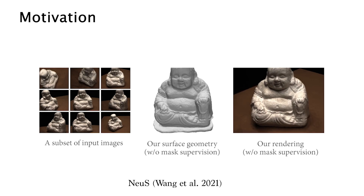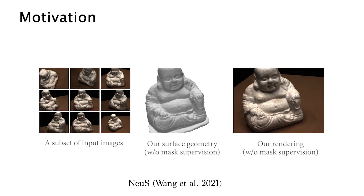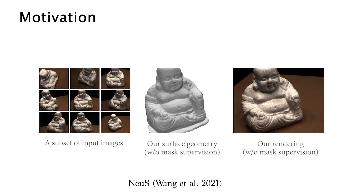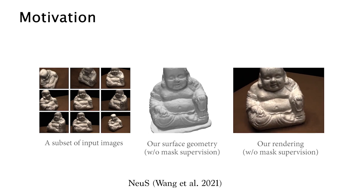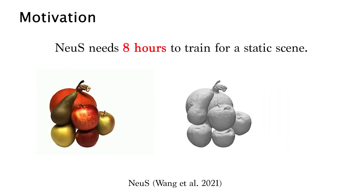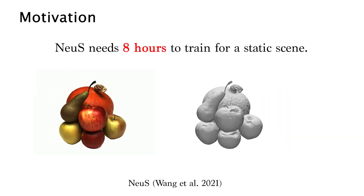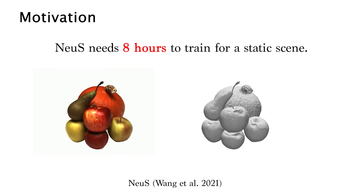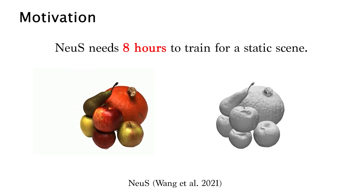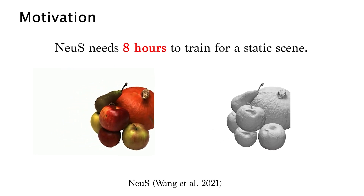Recently, 3D reconstruction with neural implicit representations has become a promising alternative to traditional methods. NuS, as a representative work, can produce high-quality reconstruction results. However, its training process is extremely slow — about 8 hours for a static object.